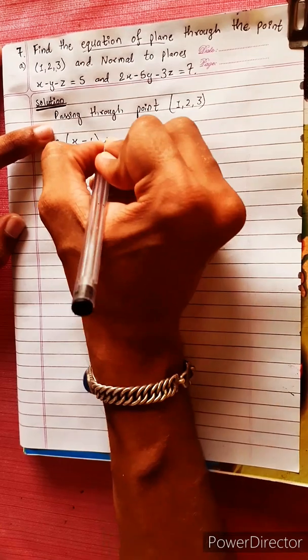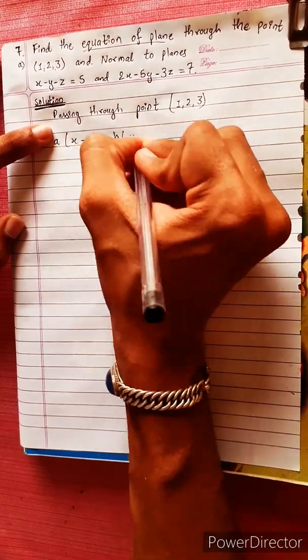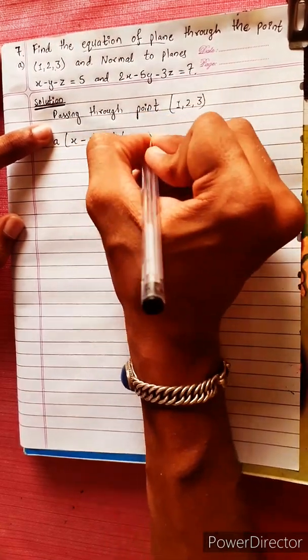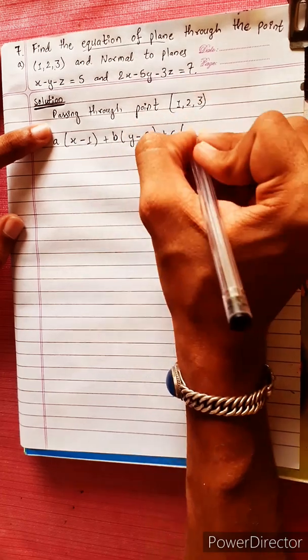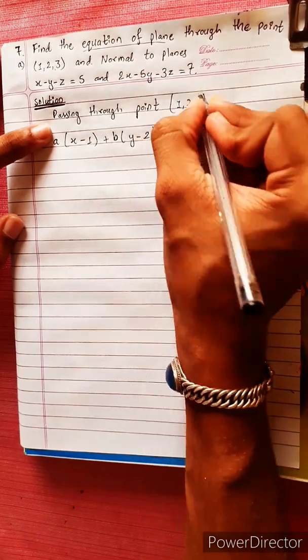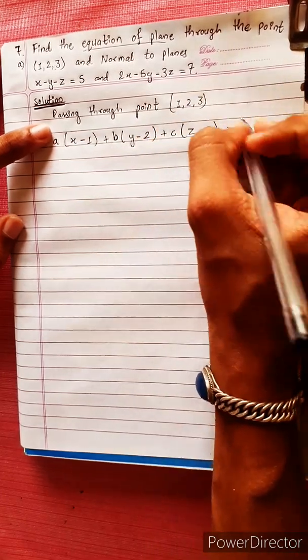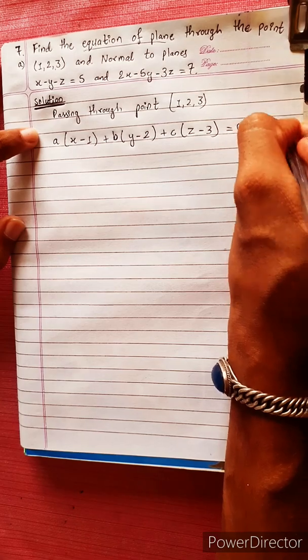We start with the general equation of a plane: a(x - x₁) + b(y - y₁) + c(z - z₁) = 0, where x₁=1, y₁=2, z₁=3.